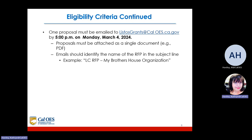One proposal must be emailed to listosgrants@caloes.ca.gov by 5 p.m. on Monday, March 4, 2024. Proposals must be attached as a single document, e.g. a PDF. Emails should identify the name of the RFP in the subject line — for example: LCRFP, My Brother's House Organization.